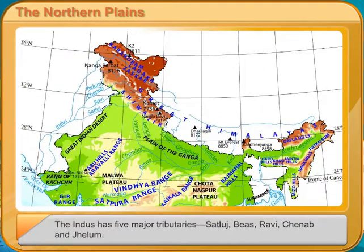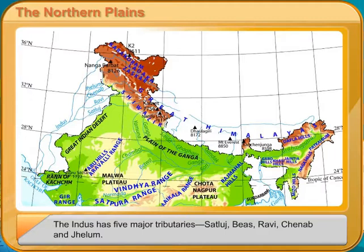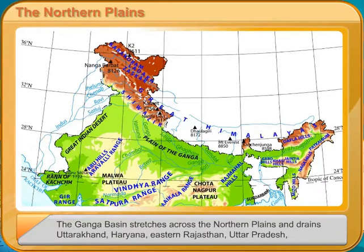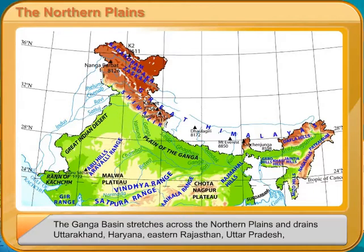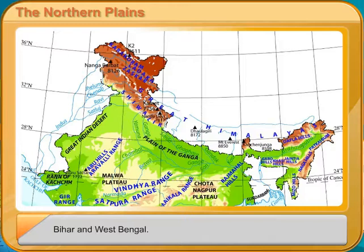The Ganga Basin stretches across the Northern Plains and drains Uttarakhand, Haryana, Eastern Rajasthan, Uttar Pradesh, Bihar, and West Bengal. The Ganga has many tributaries — Yamuna, Gandak, Kosi, Gomti, Ghagara, and Tista being some of them.